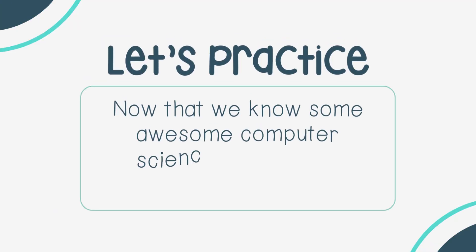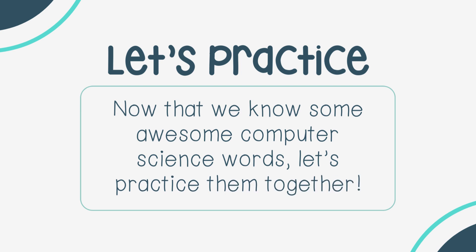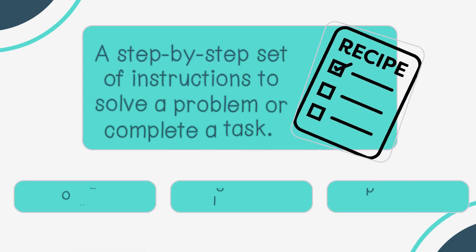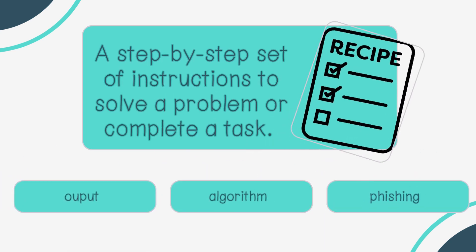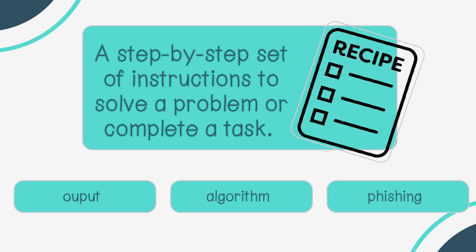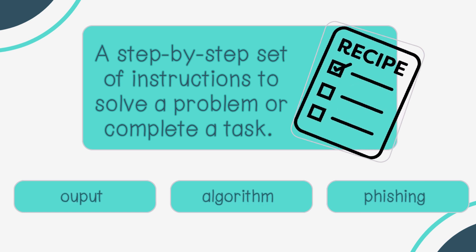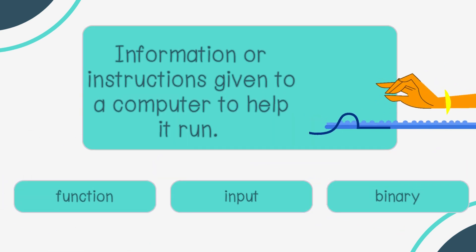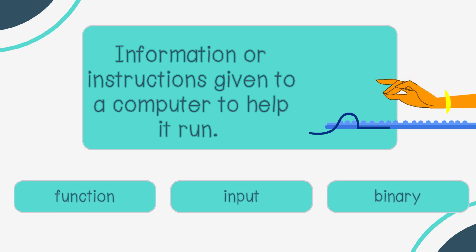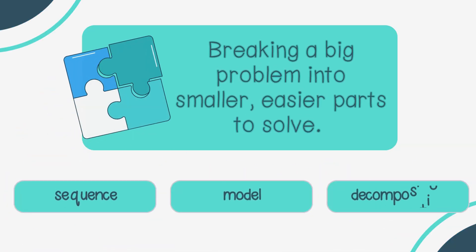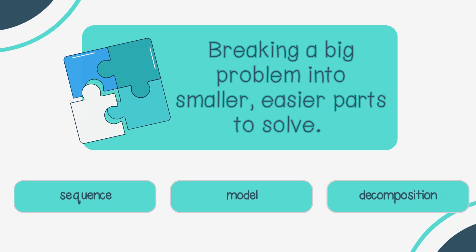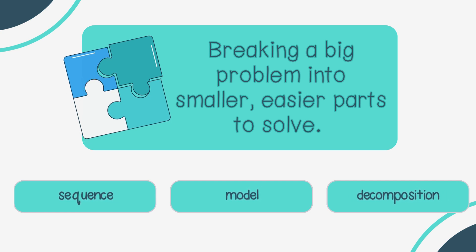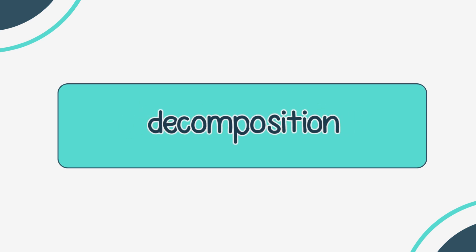Let's practice! Now that we know some awesome computer science words, let's practice them together. Step-by-step set of instructions to solve a problem or complete a task — is that output, algorithm, or phishing? Algorithm. Information or instructions given to a computer to help it run — function, input, or binary? Input. Breaking a big problem into smaller, easier parts to solve — sequence, model, or decomposition? Decomposition.